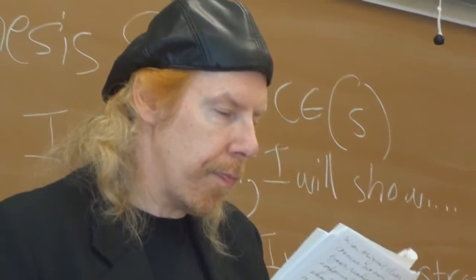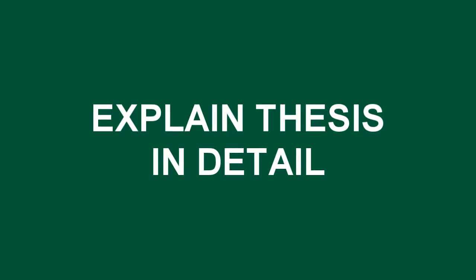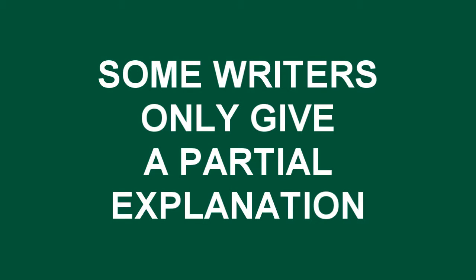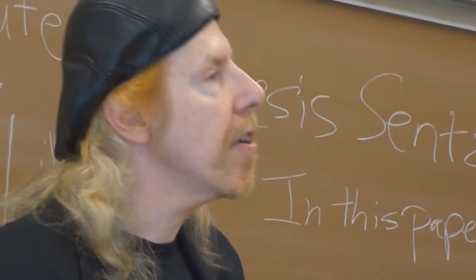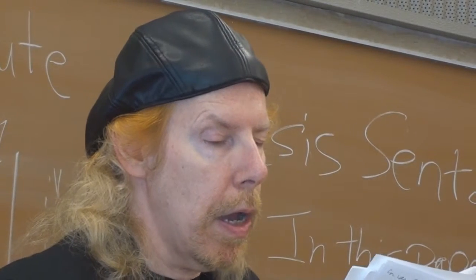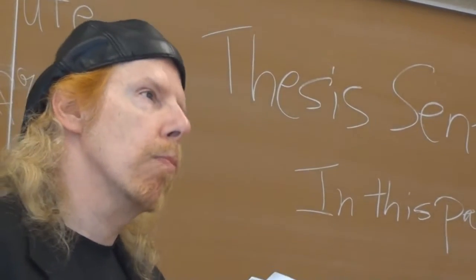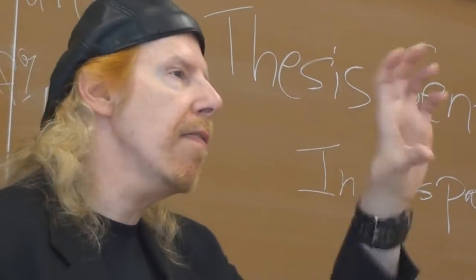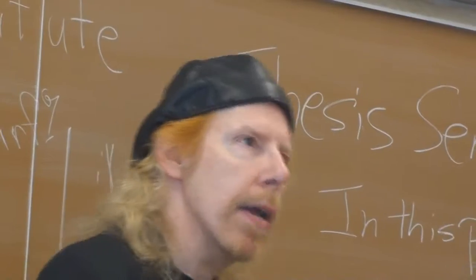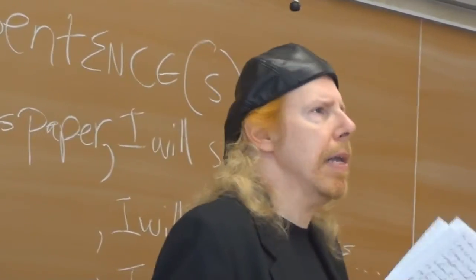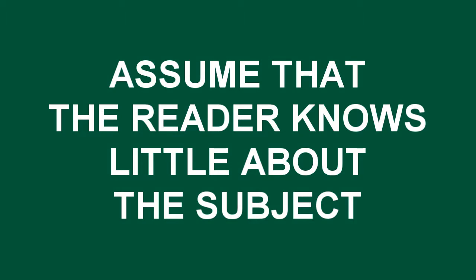The development section explains your thesis sentence or sentences in detail. You want to make sure that the points you make have a beginning, a middle, and an end. This is where a lot of writers fall down — they only give a partial explanation. They'll start explaining a point but not tell how it ends, or leave out important chunks in the middle. You want a beginning, a middle, and an end for every point in the body of your paper.